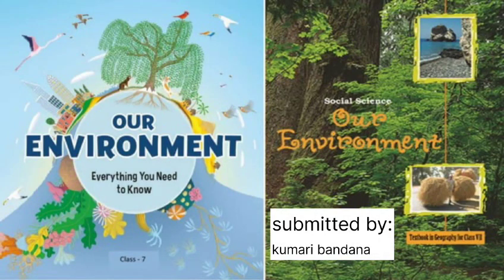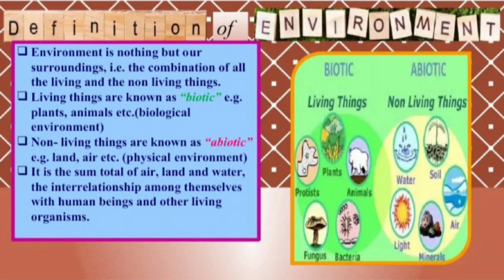Today we will study about our environment. Environment is nothing but our surrounding — the combination of all the living and the non-living things. Living things are known as biotic, for example plants and animals. Non-living things are known as abiotic, for example land and air. It is the sum total of air, land, and water, and the interrelationship among themselves with human beings and other living organisms.